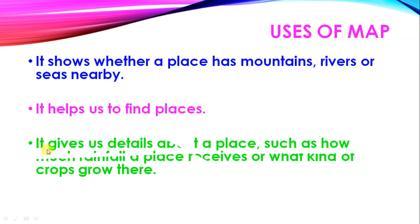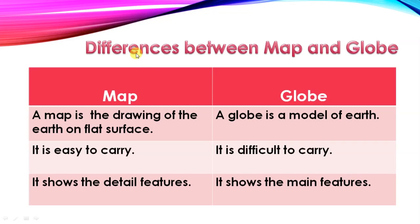Next, it gives us details about a place. It gives us details about a place such as how much rainfall a place receives or what kinds of crops are grown there, which type of soil is there, which area is populated, each and everything.